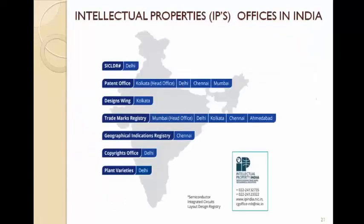Nowadays everything is online — the agent will send a power of attorney and you can sit at home and apply the patent or design patent. In the lockdown, I applied one patent. In India, the semiconductor office is at Delhi. The Patent Office head office is at Kolkata, with regional offices at Delhi, Chennai, and Mumbai. The Design Wing is only at Kolkata. Trademark Registry head office is at Mumbai, with offices in Delhi, Kolkata, Chennai, and Ahmedabad. Geographical Indication Registry is at Chennai. Copyrights Office is at Delhi. Plant Varieties Office is at Delhi.